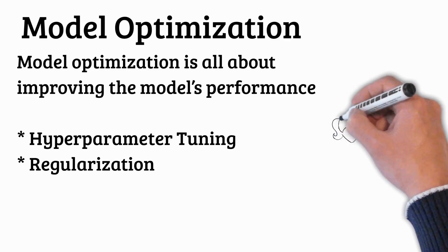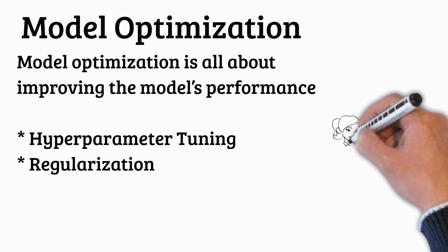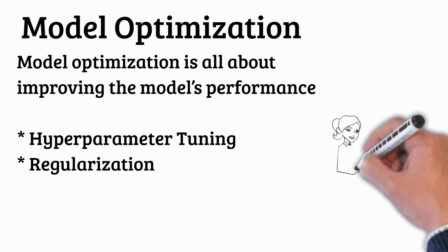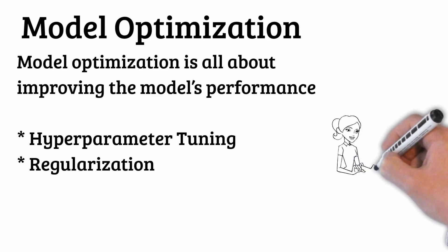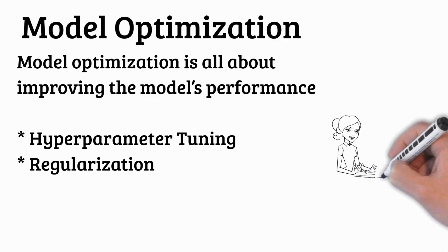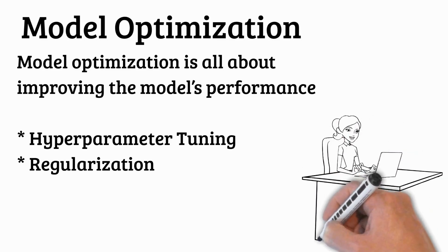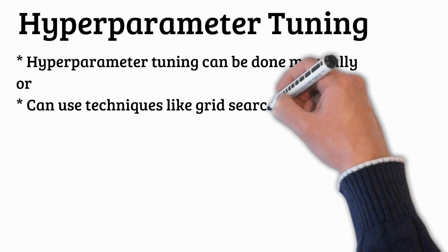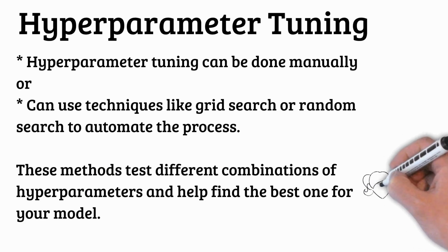Hyperparameters are settings that developers set before training the model, including things like the learning rate, the number of layers in a neural network, or the maximum depth of a decision tree. These parameters control how the model learns and can significantly affect its performance. To optimize the model, we try different combinations of hyperparameters to find which gives the best performance — this process is called hyperparameter tuning. For example, if you set the learning rate too high, the model might overshoot the optimal solution; if it's too low, the model may take too long to learn. Hyperparameter tuning can be done manually, or using techniques like grid search or random search to automate the process.